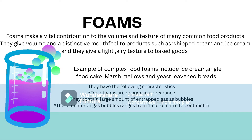Regarding foaming agents, the two most important characteristics of a foam are foam volume and foam stability. Foam volume depends on the ability of the foaming agent to absorb at the interface and rapidly reduce interfacial tension, and on the level of energy input during whipping. Foam stability depends on the ability of the foaming agent to produce a stable interfacial film and a viscous continuous phase.